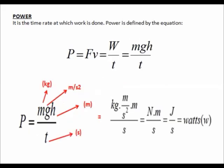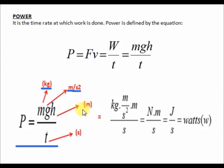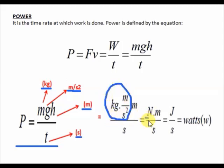Now let us derive again the units for power. For the last formula, P = M·G·H/T, where mass M should be in kilograms, gravitational constant G should be in meters per second squared, height H should be in meters, and time T should be in seconds. Kilogram multiplied by meter per second squared is equal to newton, and newton multiplied by meter is joules, and joules over second is watts, denoted as small letter w.